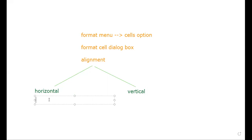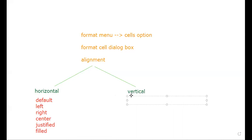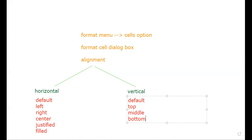The types of horizontal alignment are: default, left, right, center, justified, and fill. The types of vertical alignment are: default, top, middle, and bottom.